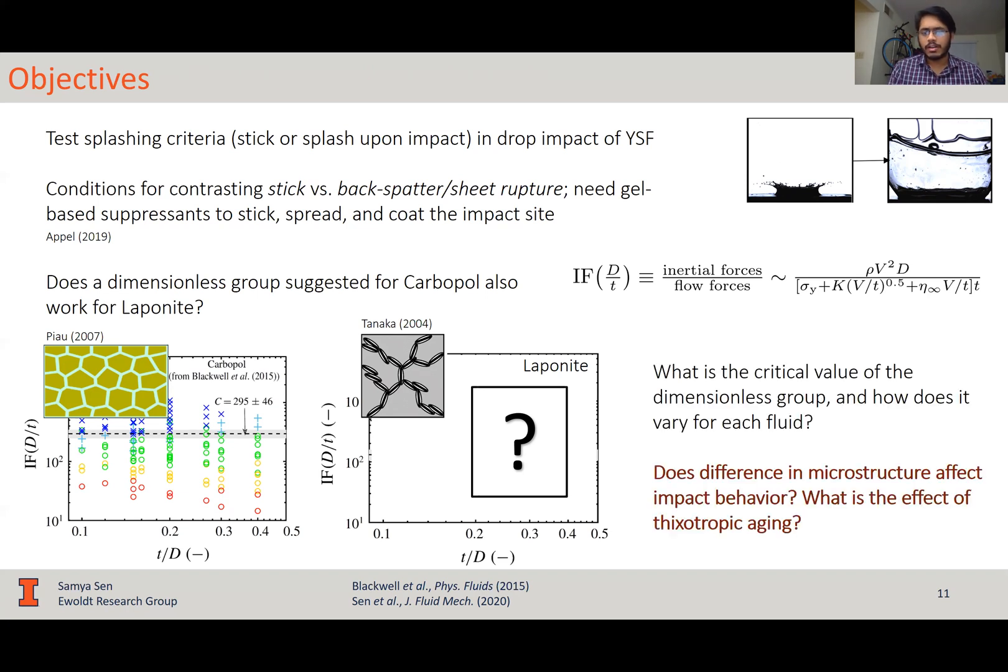This should answer the big question of our talk, does microstructure really affect drop impact behavior, and if so, how? And also, what is the effect of thixotropic aging, which also is a microstructural effect?